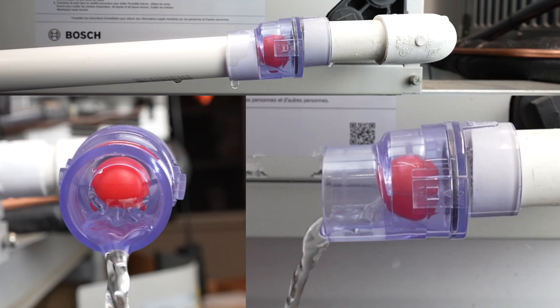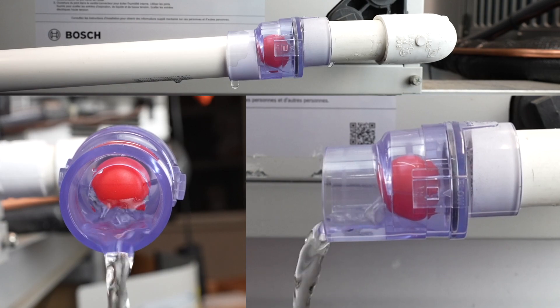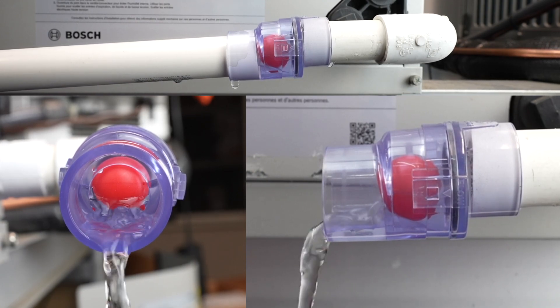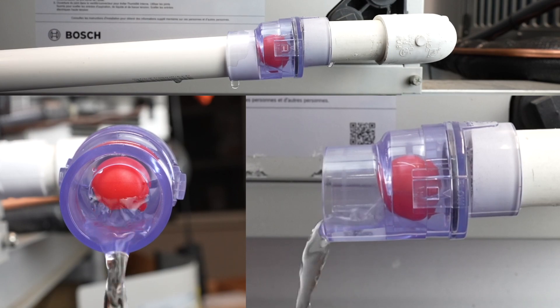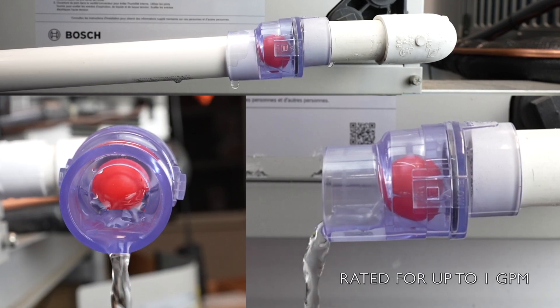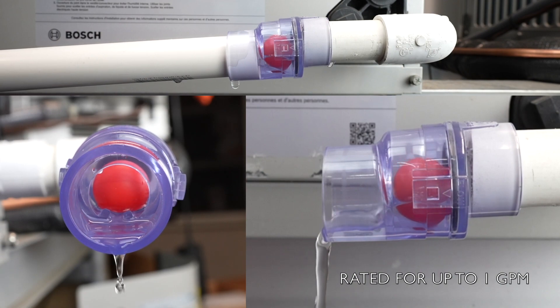Once condensate builds up, it will push the ball valve away from the hole, up the standoffs, allowing the condensate to flow freely past. When no condensate is present, the negative pressure pulls the ball valve against the hole, seals the condensate line, saving energy and eliminating dirty air from entering the system.